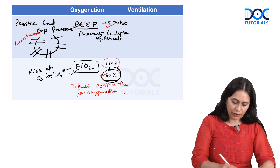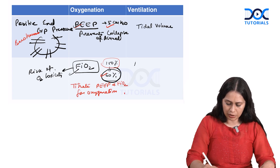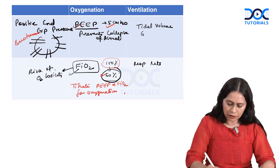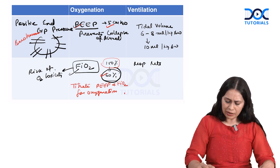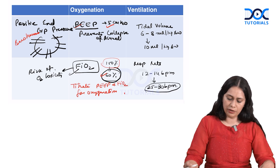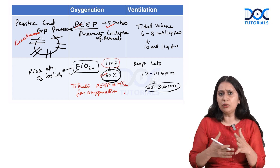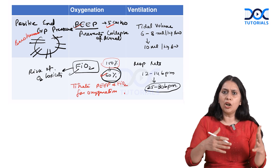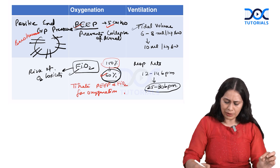For ventilation, tidal volume and respiratory rate are the two responsible factors. For tidal volume, we start with 6 to 8 ml per kg body weight and can increase to 10 ml per kg if adequate minute ventilation is not achieved. For respiratory rate, we start with 12 to 14 breaths per minute and can increase to 25 to 30 breaths per minute if needed. Questions may provide a ventilatory setting and ask you to make changes based on the ABG report — change PEEP and FiO2 for oxygenation, tidal volume and respiratory rate for ventilation.